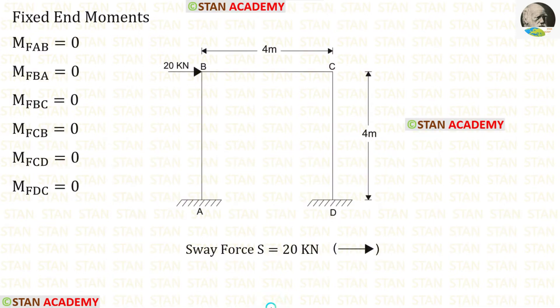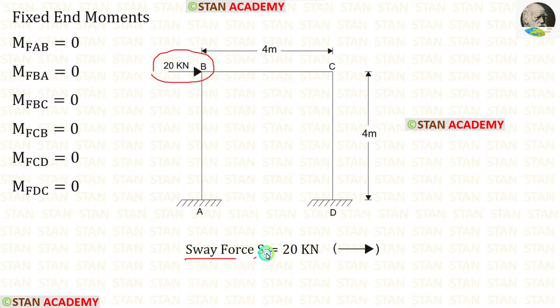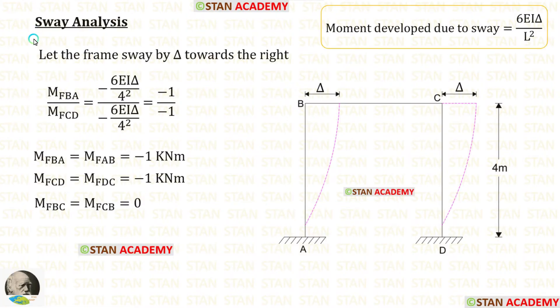This frame is subjected to sway. In sway frames, we have to do the analysis two times: first non-sway analysis, then sway analysis. But here, all of the fixed end moments are zero, so there is no need for non-sway analysis. We can directly go for sway analysis. The nodal point load of 20 kN is the sway force S. In the sway analysis, we remove all loads and let the frame sway by delta towards the right.